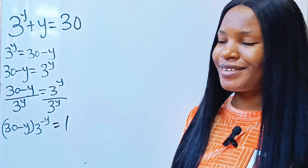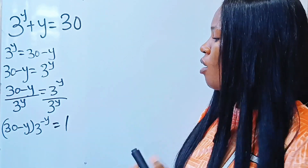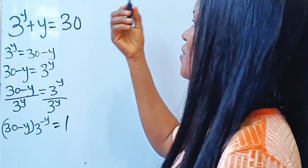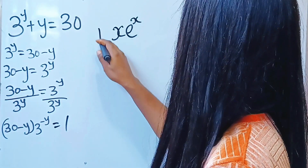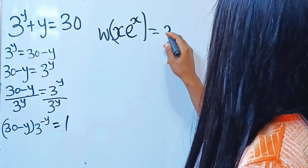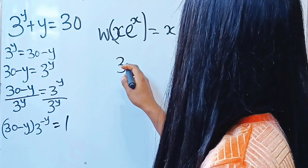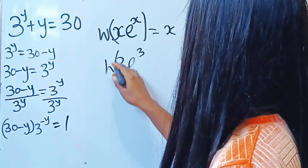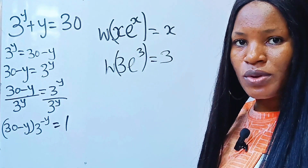Let me introduce the Lambert W function. This function states that if you have something like x·e^x and you apply this function to it, you get x as your solution. For example, if you have 3·e^3 and apply the Lambert W function, you get 3 as your result.